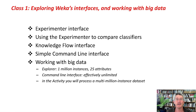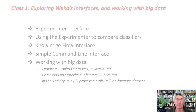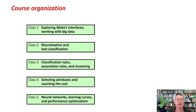The course is organized just like the previous one, with five classes. Each class has got about six lessons. The next class is on Discretization and Text Classification. Then we're going to look at Classification Rules and Association Rules and Clustering. Then we'll look at Attribute Selection and Cost-Sensitive Classification. Then finally, in class 5, we'll look at Neural Networks, Learning Curves, and Performance Optimization.